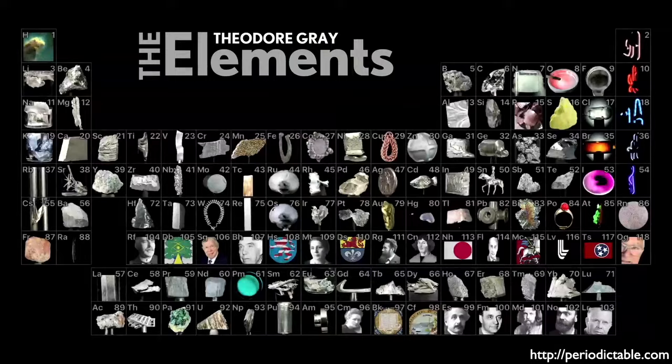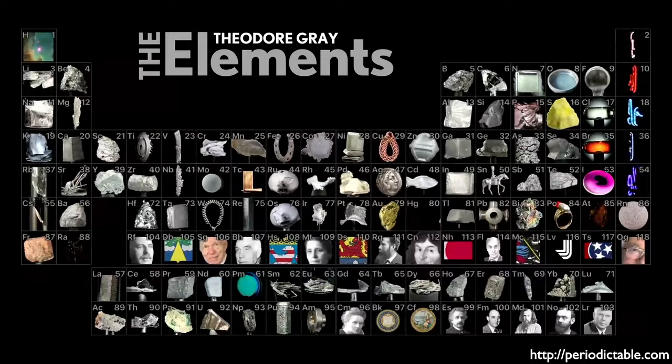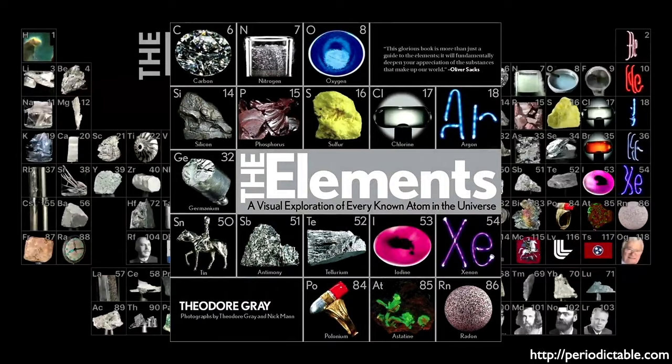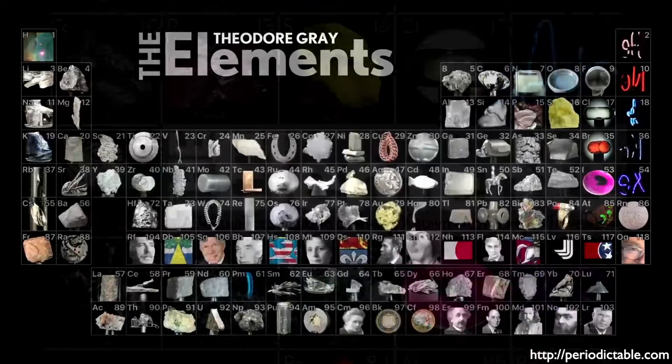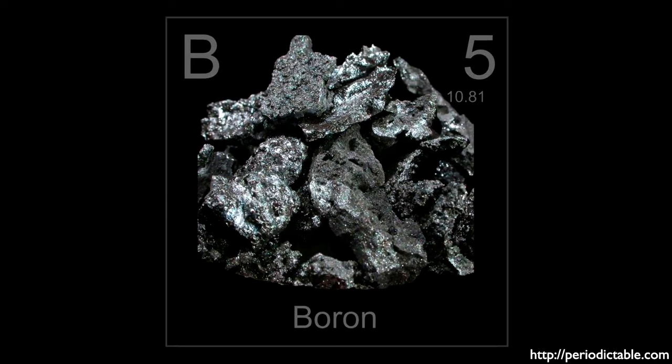Here we see the beautiful periodic table produced by Theodore Gray. As I've mentioned in previous episodes, Theo has written one of my favorite books called The Elements, which I encourage you to pick up. Check out his fantastic website, periodictable.com. As I mentioned, boron is the fifth element in the periodic table. Its atomic number is five because that's how many protons are in its nucleus, and that's what distinguishes it as a unique element.